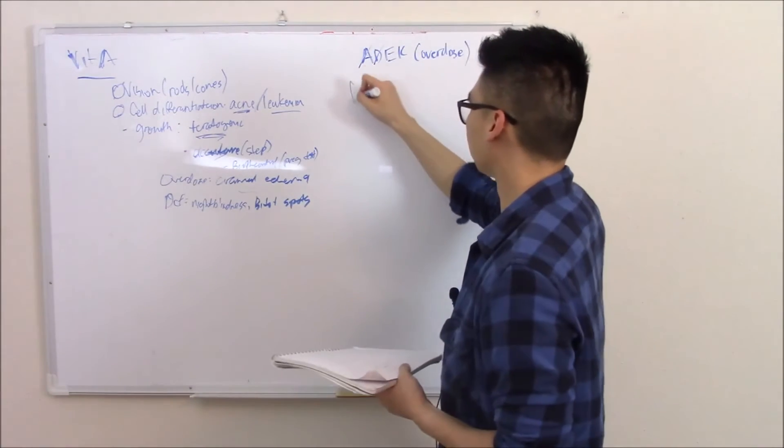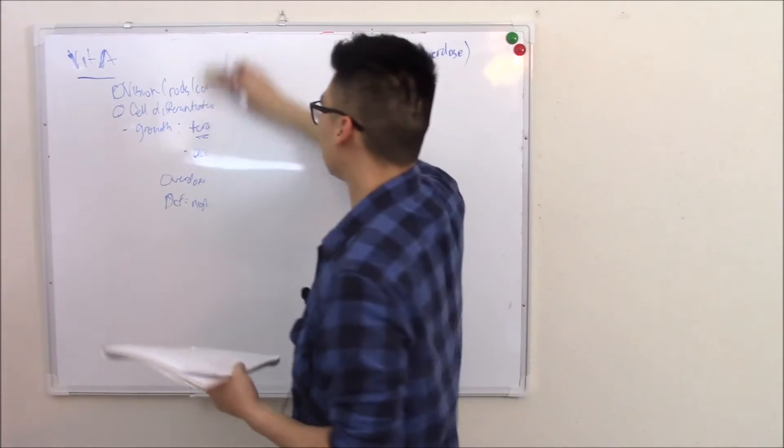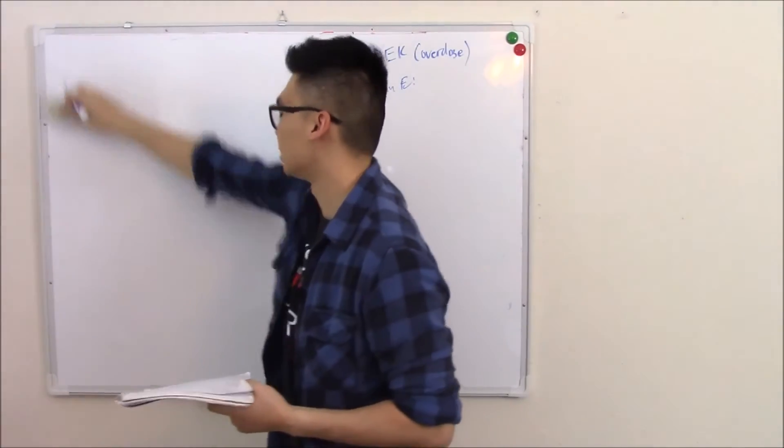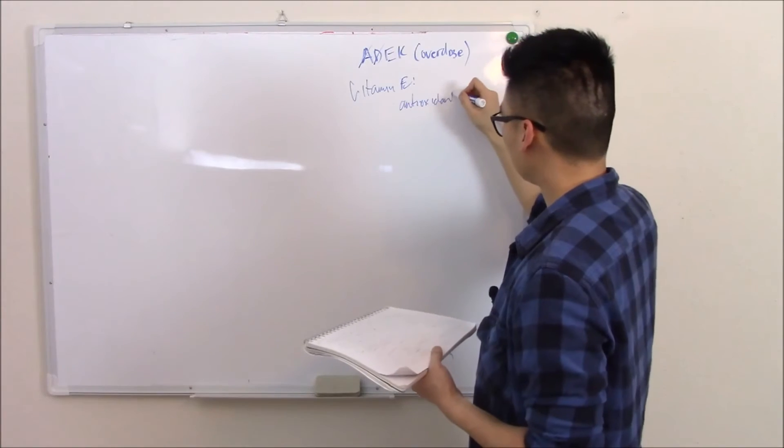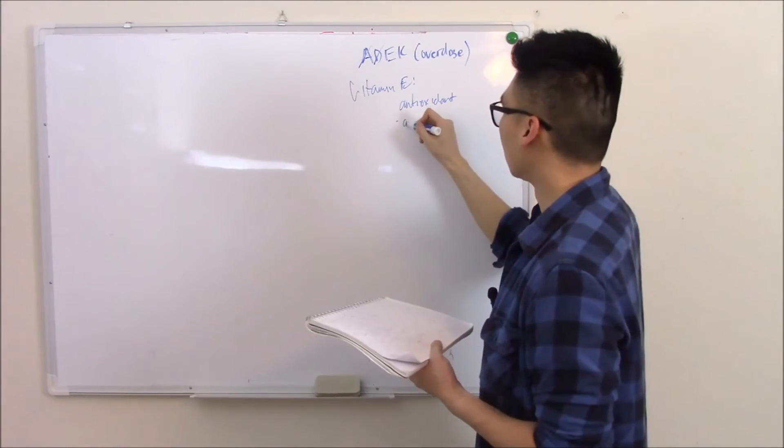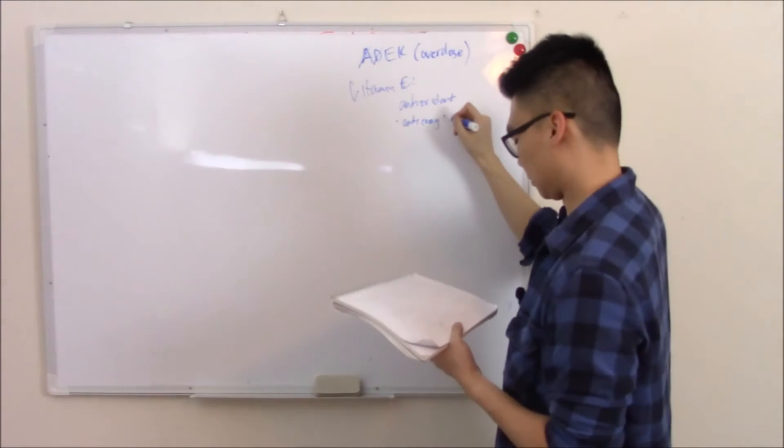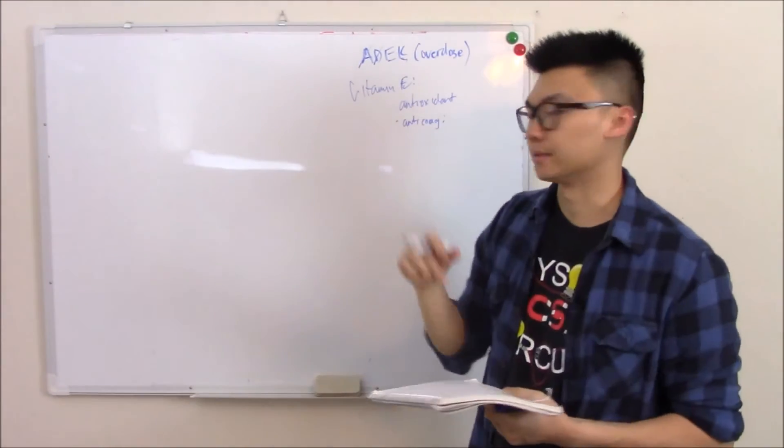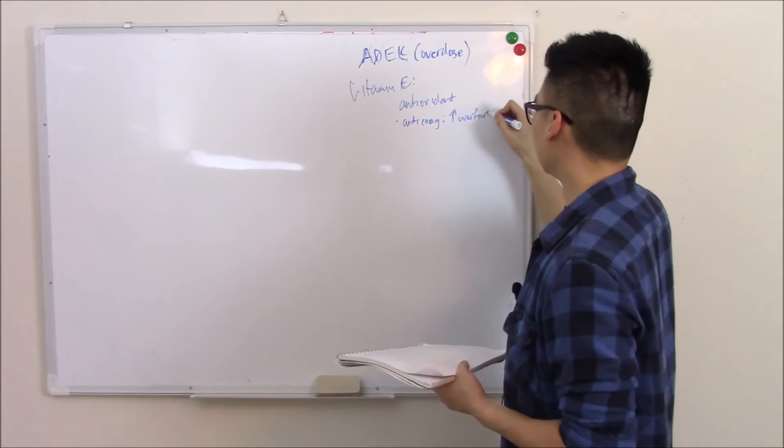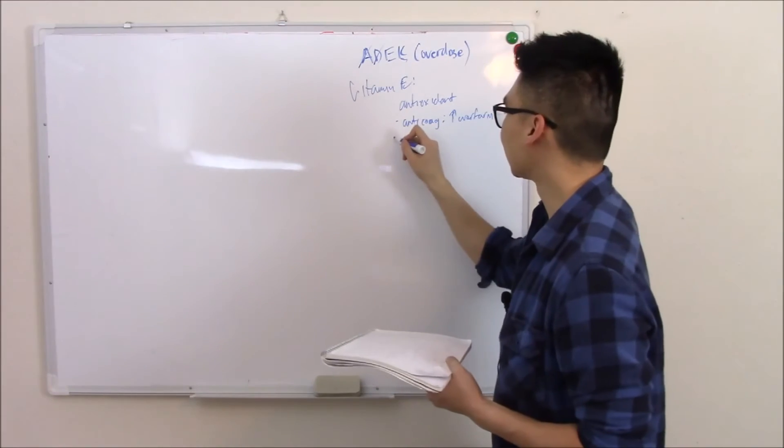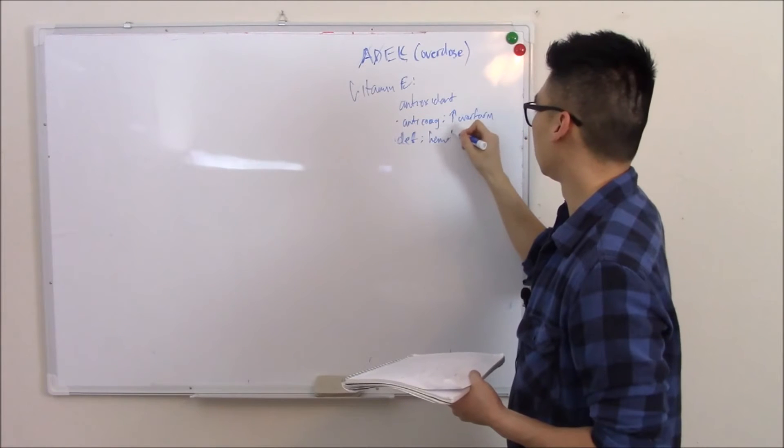Now on to vitamin E. Vitamin E, I say is called E because it does everything. Vitamin E is an antioxidant, so it stops free radicals. It is also an anticoagulant. It stops vitamin K, which we'll talk about in a second, from making clotting factors. So it actually enhances drugs like warfarin, can increase bleeding.